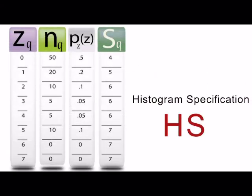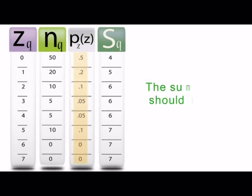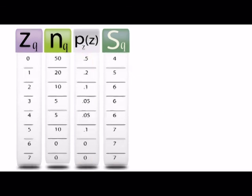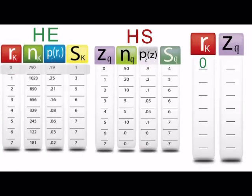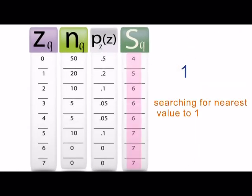Histogram Specification. This is the result after computing P of Z and S of Q. Check the summation for P of Z - it should be 1.